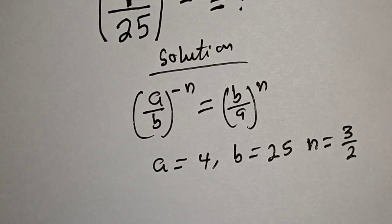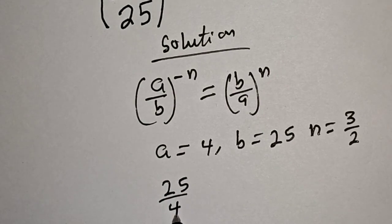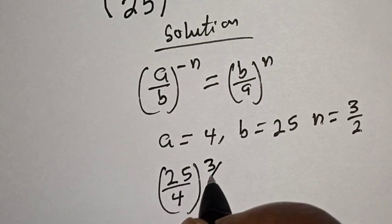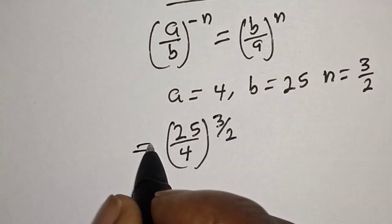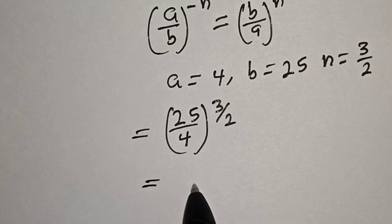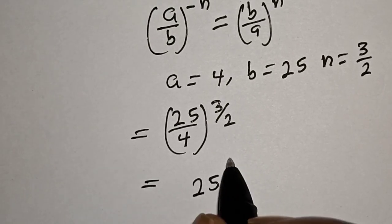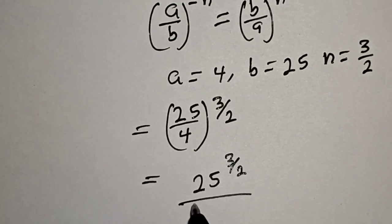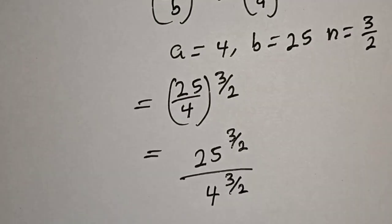So we have 25 over 4, raised to the power of 3 over 2. Then let's open this bracket. This is equal to 25 raised to the power of 3 over 2, divided by 4 raised to the power of 3 over 2.